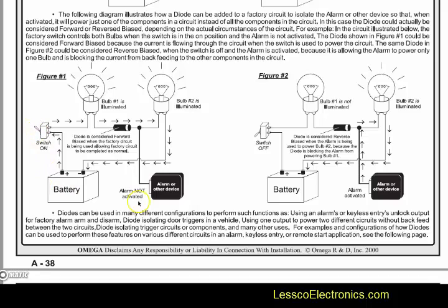Moving along, you've got some stuff happening here: you have a switch, an alarm, and two bulbs. The ground is going to pass in this direction no problem. So if you have a switch open, positive energy resting on one side of the filament with a negative energy path would turn on that bulb, but it would not go back the other way because the diode only allows flow in one direction.